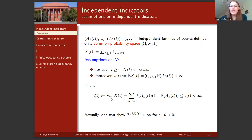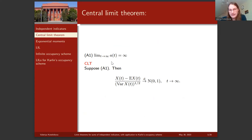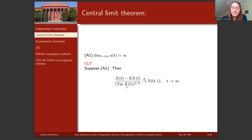Let me emphasize: we denote by b the mean of process X and by a the variance of process X. We use this notation throughout the talk. The first theorem is the central limit theorem. To have it, we need only one assumption: that the variance diverges to infinity. Then the process X centered by its mean and normalized by the square root of its variance converges in distribution to a standard normal random variable.